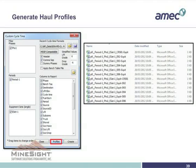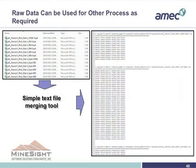We can also generate haul profiles for all of those polylines, and they will all go to one folder. We have all the files there, and we can put a simple text file merging tool to combine them. This will produce a text file, and after that we can play around with the data in our own way.